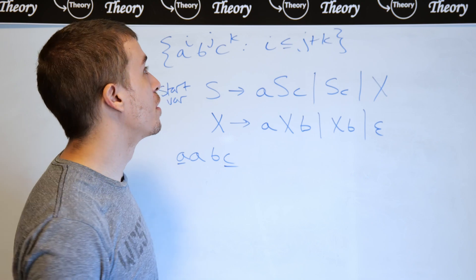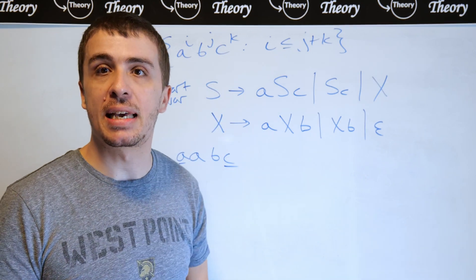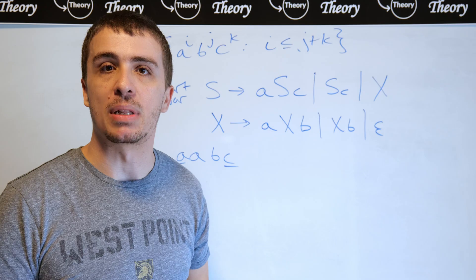So this is a grammar for the language A to the I, B to the J, C to the K, where I is at most J plus K.